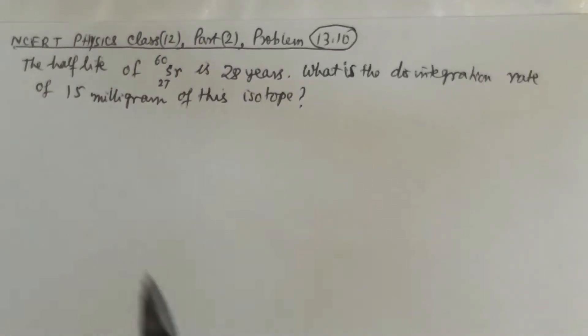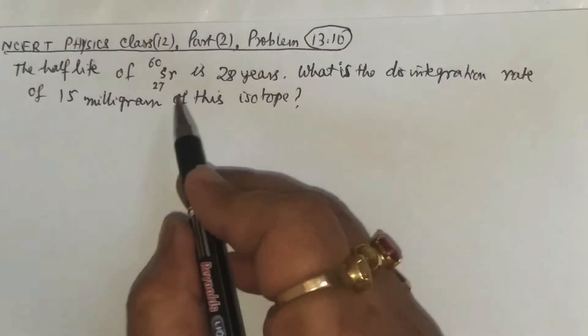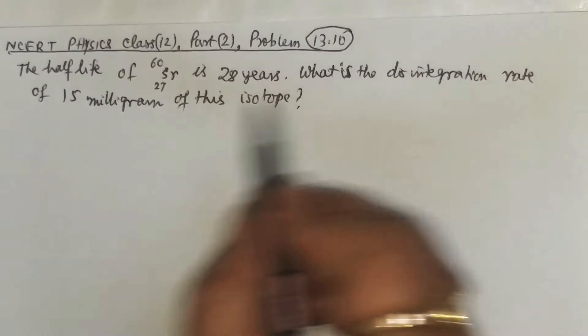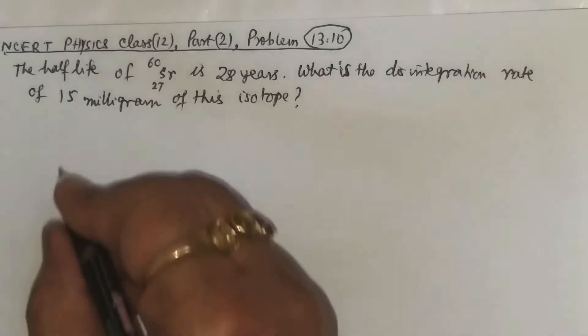Here it is informed that the half-life of this isotope Sr-60 is 28 years, and then what is the disintegration rate of 15 milligrams of this isotope.